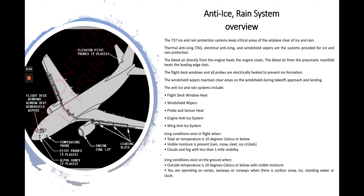It's very important to keep in mind when icing conditions exist in flight or on the ground. In flight, icing conditions exist when the total air temperature is 10 degrees Celsius or below when visible moisture is present — rain, snow, sleet, ice crystals — and clouds and fog with less than one mile visibility.